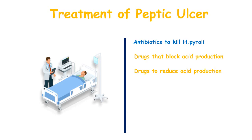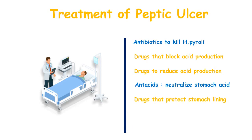Another drug category is antacids, which are used to neutralize stomach acid. There are also drugs that protect the stomach lining. The stomach lining is a protective membrane that can be damaged by acid and peptic enzymes. A protective medication or coating is applied on the stomach lining to protect the mucosal membrane.